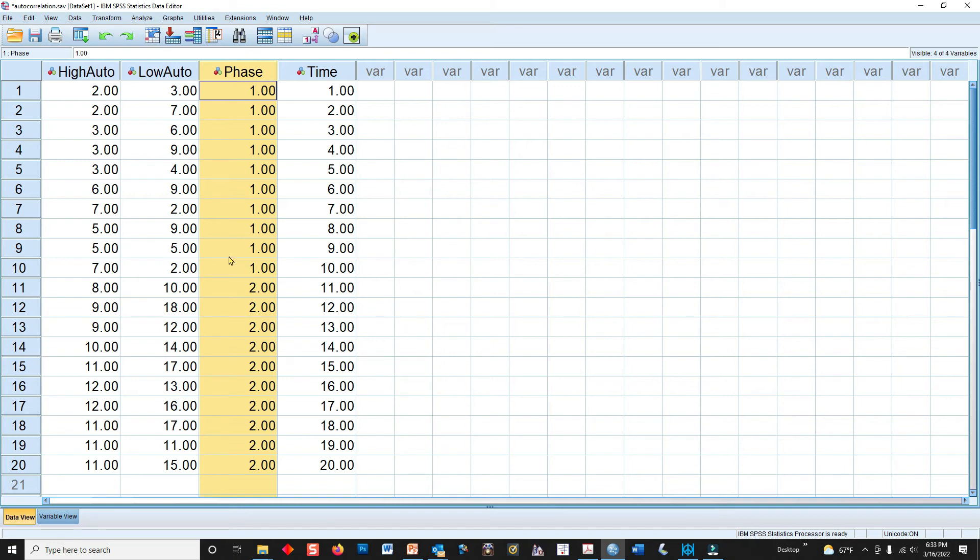So if you actually go and watch my video on autocorrelation, I use a different dataset, but I use the phase designation or phase variable there. But what we need here to actually get the Durbin-Watson statistic is a variable called time, which is your measurement period.